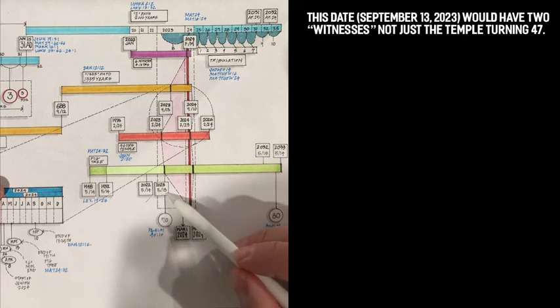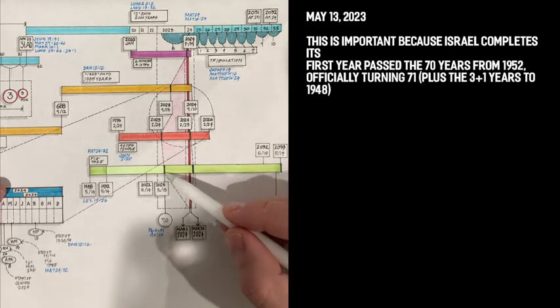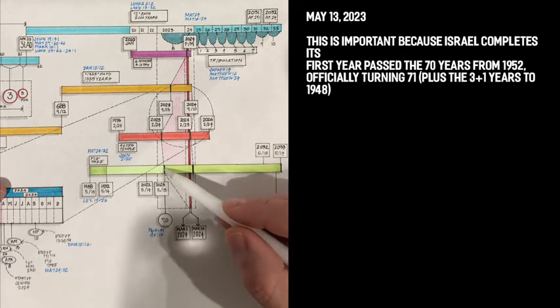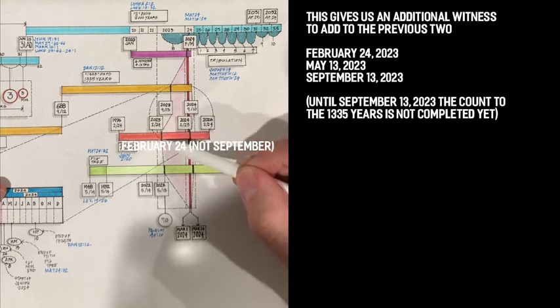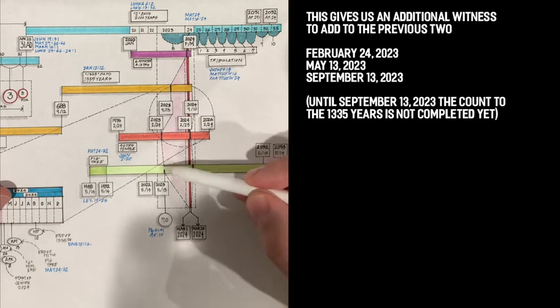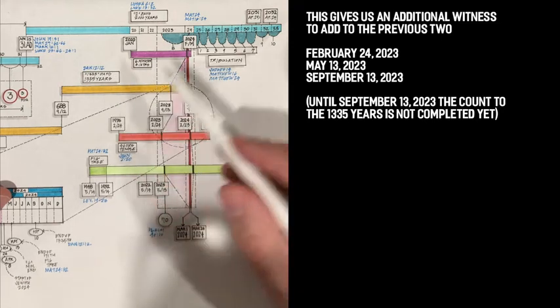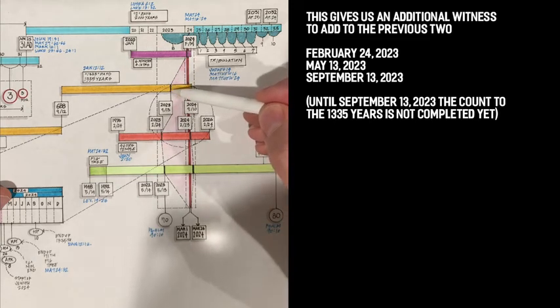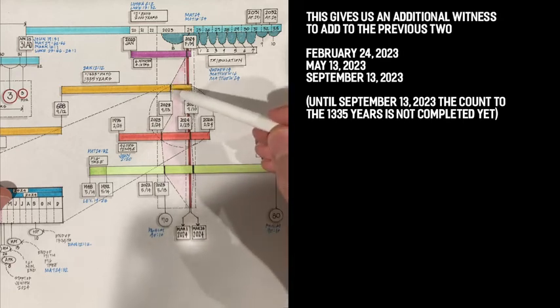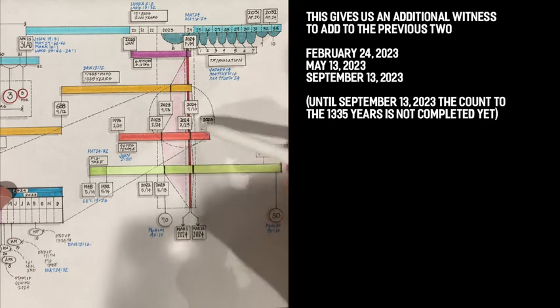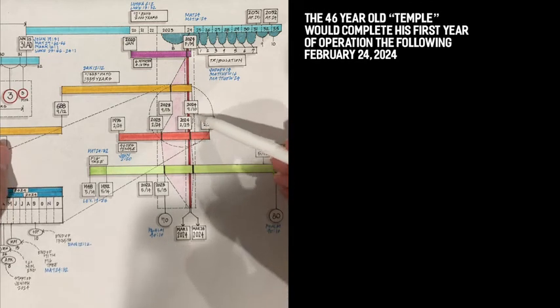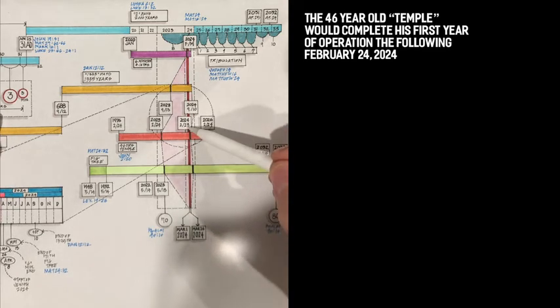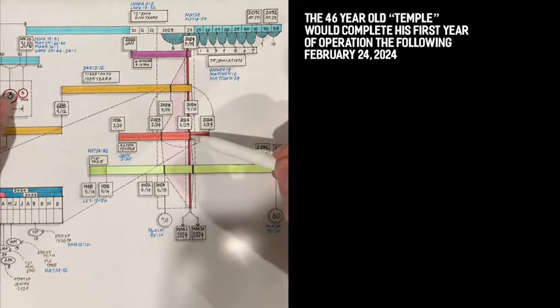But we also have on May 13, the 71st year, or the 70th year of the fig tree generation come to an end, because it will officially finish the 71st year. So we have a third witness on May 13. So first witness, September 24th, with Arari's birthday. And then we have 5, 13, May 13, with Israel's birthday. And then 9, 13, with the 1335 years coming to a completion or a start of the 1335th year. So until September 13, the 1335 years haven't really passed. So now we have three witnesses starting September 13. Then as we move on, we would have the temple completed in the 71st year all the way to February of the following year, 23 of February 2024. That will be the first year completed of the first year, 60 year temple in operation.